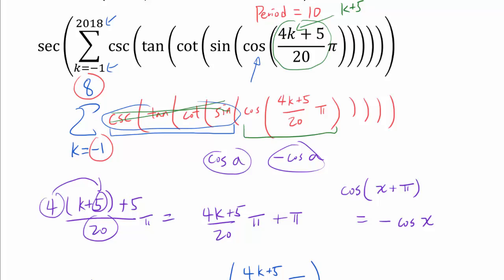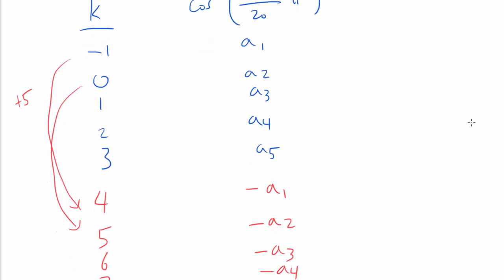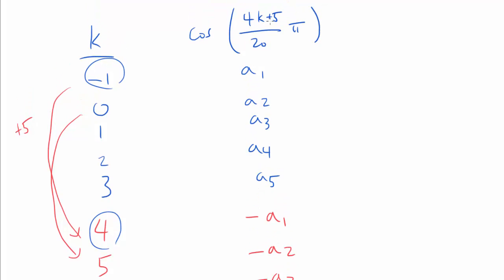Well, something remarkable about these four functions is that they are all odd functions, which means, for example, sine of negative x is negative sine of x, tangent of negative x is negative tangent of x, and so on. So for example, let's say we had k equals negative 1 and 4, and once we took cosine of (4k+5)/20π, we got a₁ and negative a₁ respectively. When we take sine of a₁ and sine of negative a₁, well, that's going to be negative sine of a₁, because sine is odd, and these are going to cancel out when we add them up.